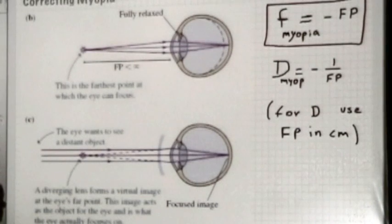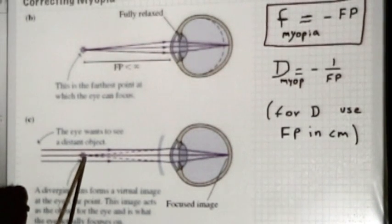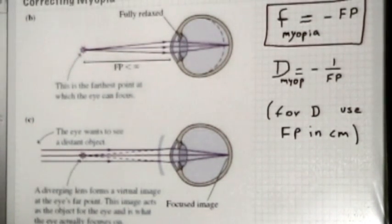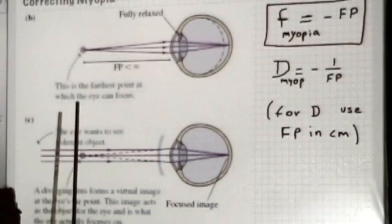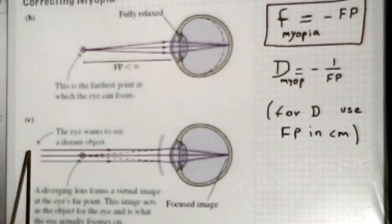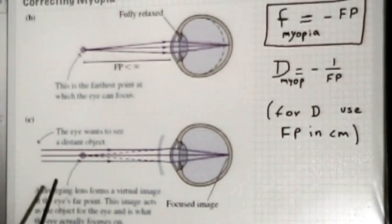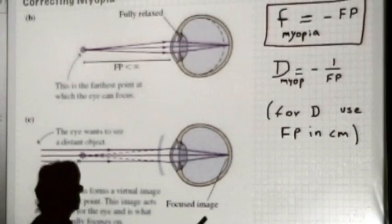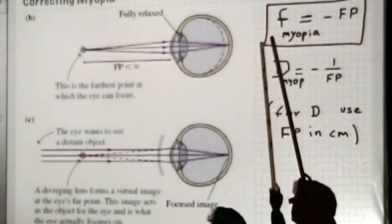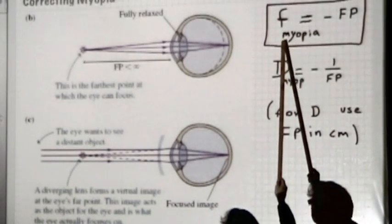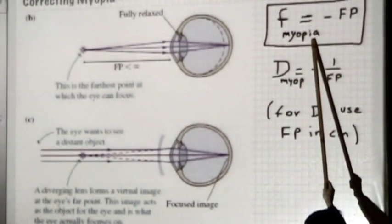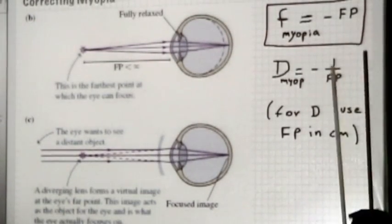What kind of lens can take an object at infinity sending parallel light rays and produce an image at the far point? That has to be a diverging lens. The focal length of the diverging lens must match the far point of the person, because parallel light rays appear to come from the focal point of a diverging lens, and that point needs to equal the far point of the eye. So to correct for myopia, you need a diverging lens — negative focal length — whose focal length exactly matches the far point of the person.